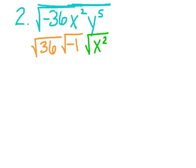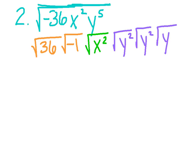And lastly, y to the 5th is really y squared, y squared, and just y. How did I get that? 2, 2, and 1 make a total of 5, and I'm breaking it down into those 2's because I need perfect squares. I'm going to go through each of my square roots and see which ones I know. The square root of 36 is the number 6. The square root of negative 1 becomes the imaginary number i. The square root and x squared cancel each other, and that becomes an x.